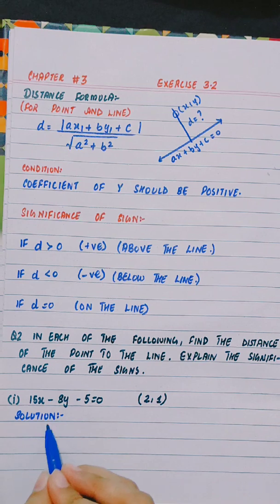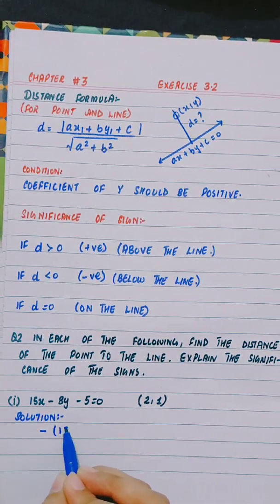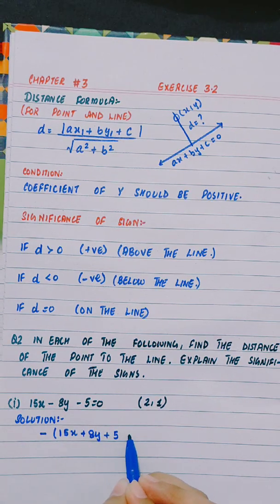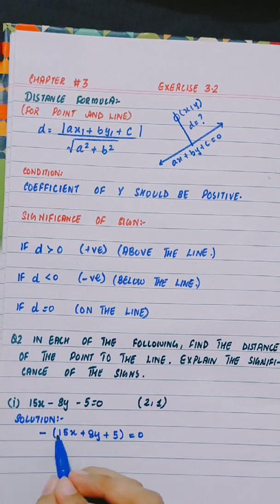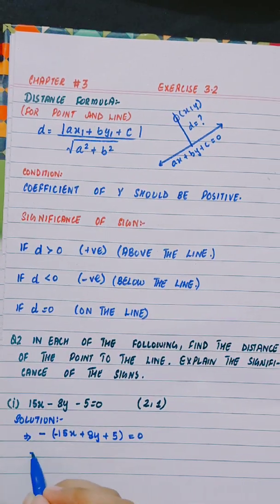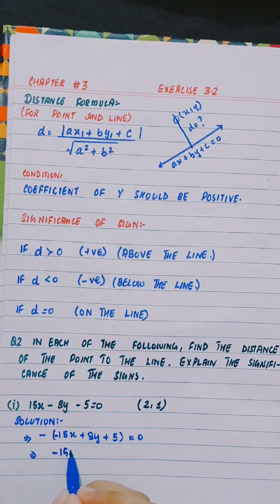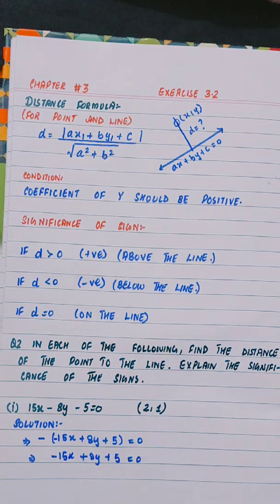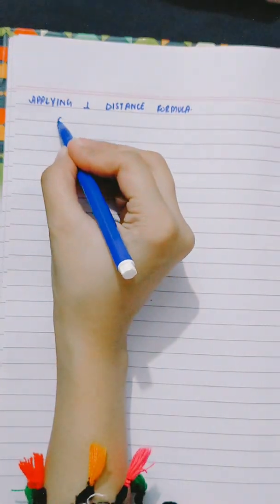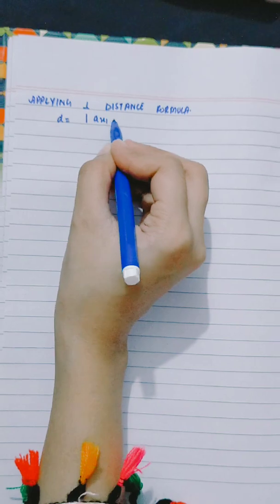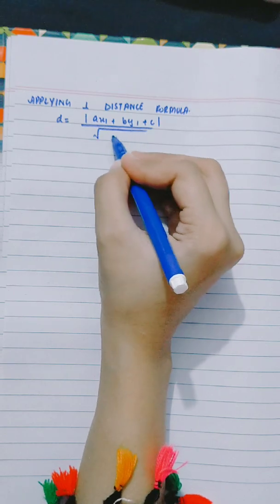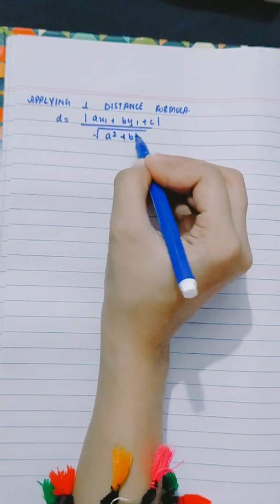The coefficient of y needs to be made positive, so we take minus as common. This gives us minus 15x plus 8y plus 5 equals 0. Now applying the perpendicular distance formula: d is equal to mod of ax₁ plus by₁ plus c, divided by the square root of a² plus b².